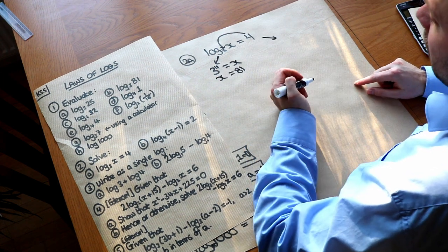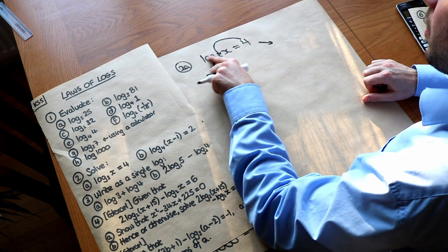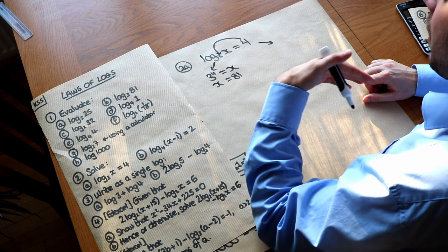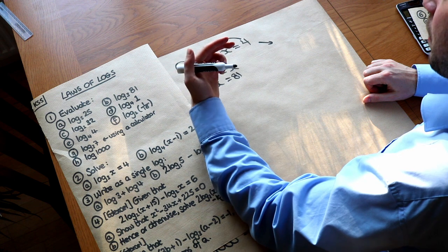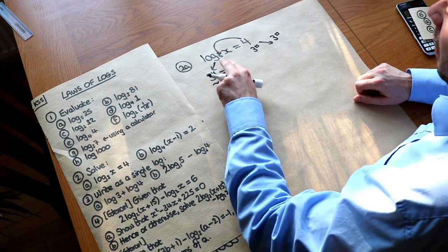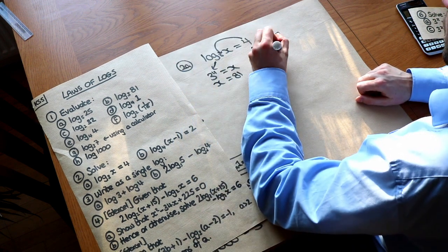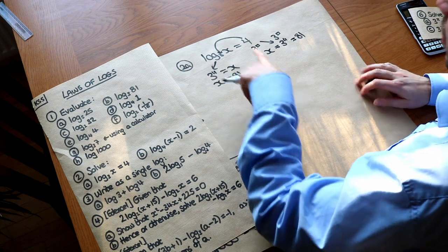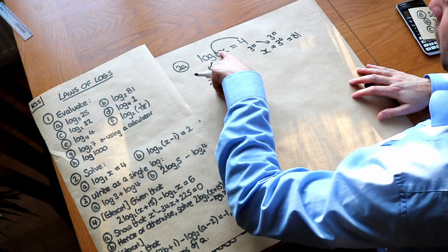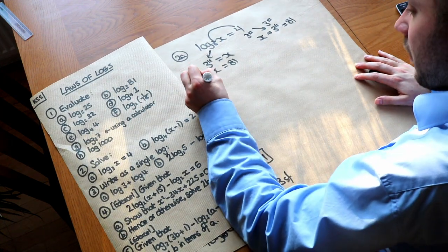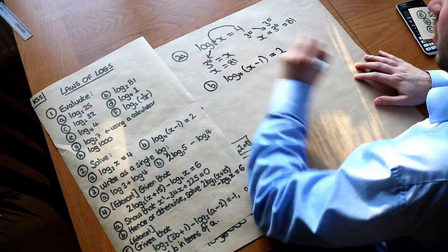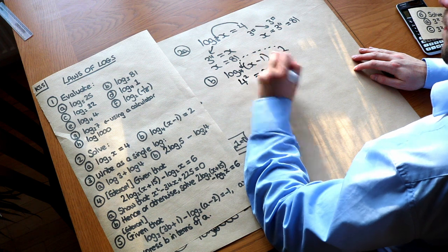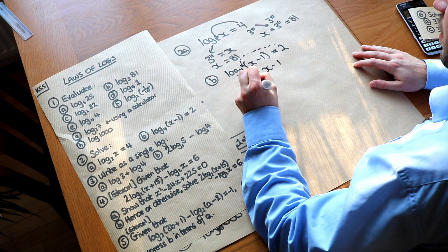The other method uses inverse functions. I've got log base 3 of x = 4. To get rid of the log base 3, do the inverse: raise 3 to the power of each side. 3 to the power of this left side gives just x, and 3 to the power of 4 gives 81. For log base 4 of (x − 1) = 2: insert the 2 to get 4² = x − 1, then add 1 to both sides: 4² + 1 = 17, so the answer is 17.